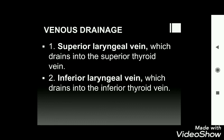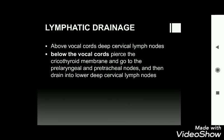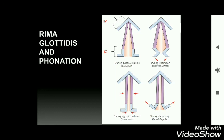Lymphatic drainage: above the vocal cords, lymphatics drain into the deep cervical lymph nodes. Below the vocal cords, lymphatics pierce the cricothyroid membrane, pass to the pre-laryngeal and pre-tracheal nodes, and then drain into the lower deep cervical lymph nodes.